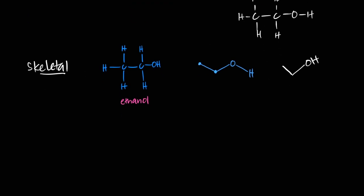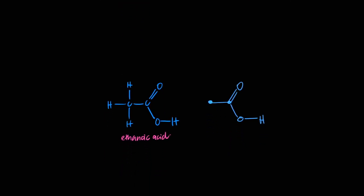We use skeletal formulae because it is the fastest and most efficient way of drawing the structure of an organic compound. For ethanoic acid (CH₃CO₂H) in skeletal form: two nodes, no H's shown, but the C=O and C–OH bonds of the functional group are shown. We'll break them down molecule by molecule to show how to draw skeletal formulae.